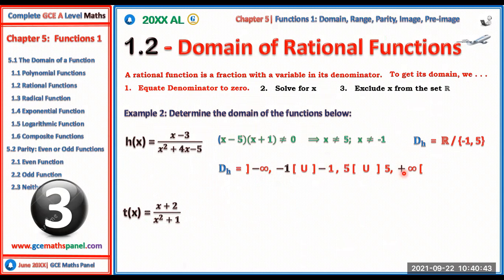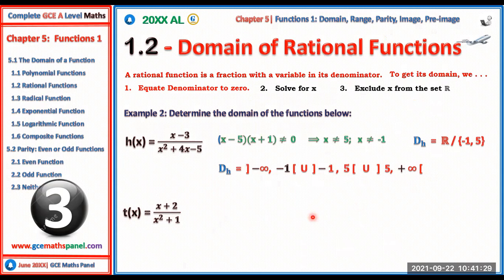Be very careful with the signs at the boundaries. This function has six boundaries: negative infinity, −1 from below, −1 from above, 5 from below, 5 from above, and positive infinity. If they ask for limits at the boundaries of the domain, they expect six limits. With other functions you'll have two or four bounds.